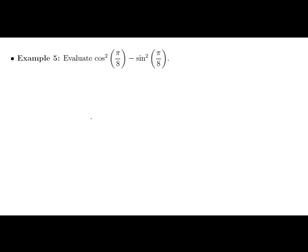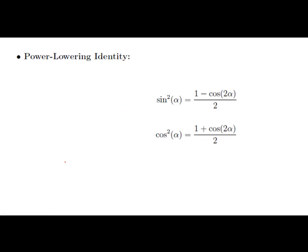Here's another example using the double angle in reverse: pi over eight is not a special value, but if we recognize an expression as the cosine of two times pi over eight — which equals cos(π/4) — then we're taking the cosine of a special angle. We know cos(π/4) = √2/2.